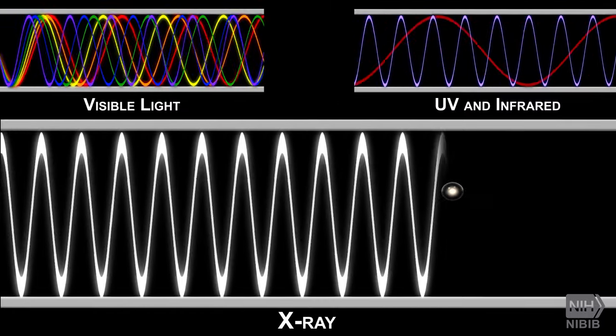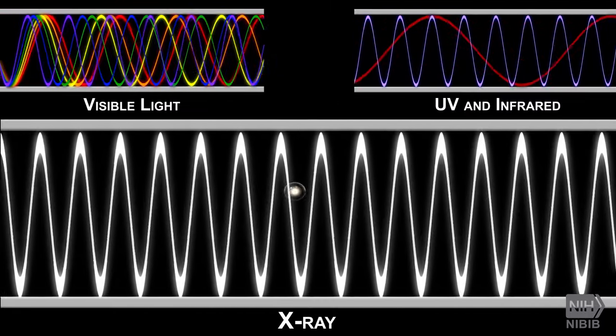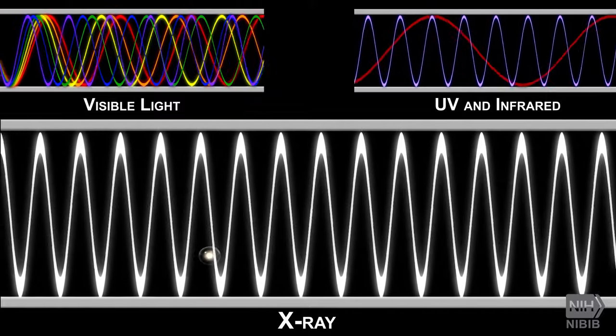X-rays have very short wavelengths that, unlike visible light, are able to pass right through most tissues in the human body.